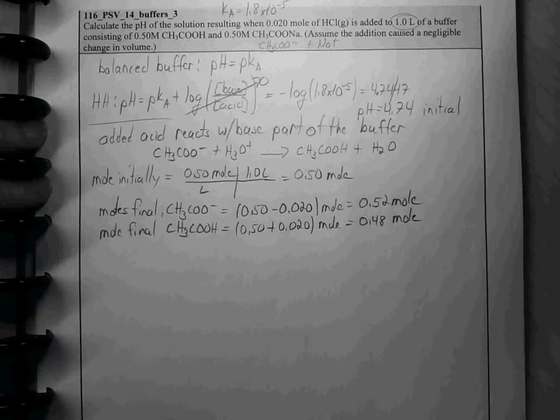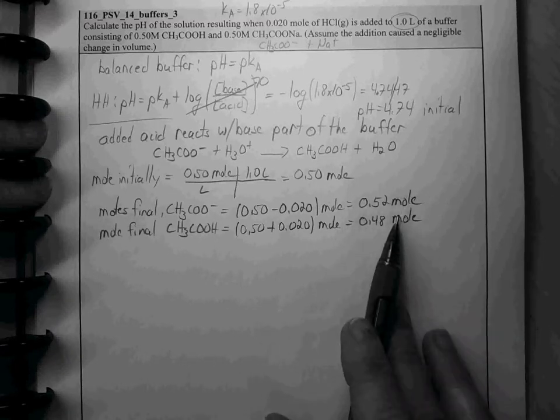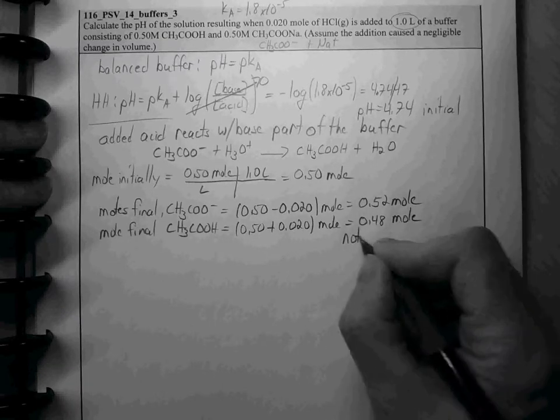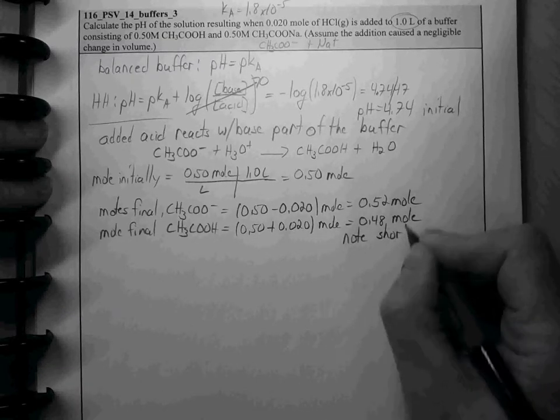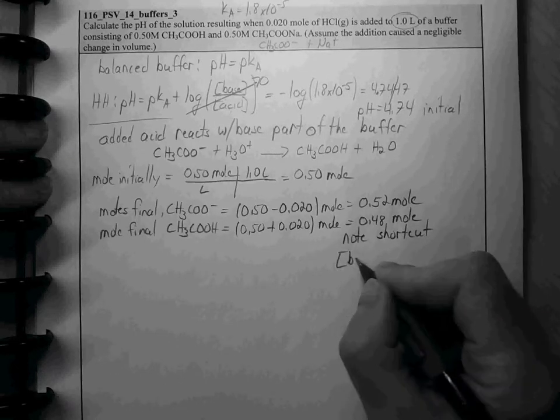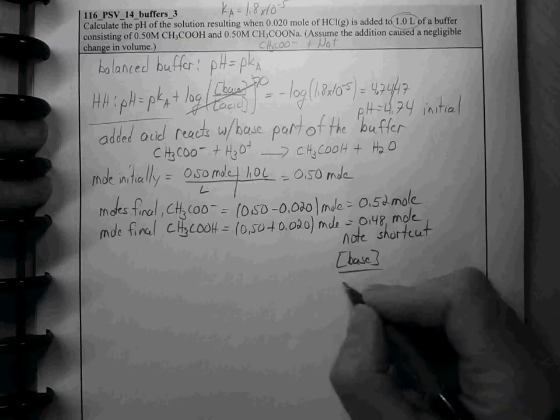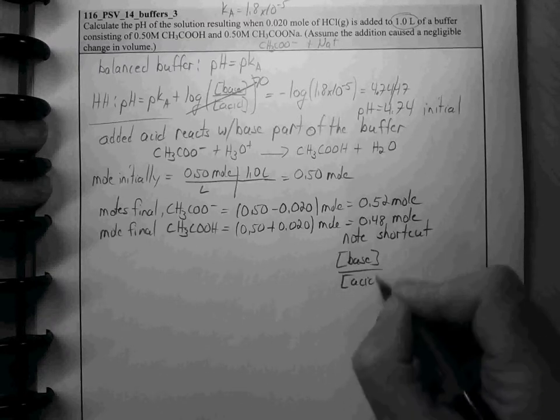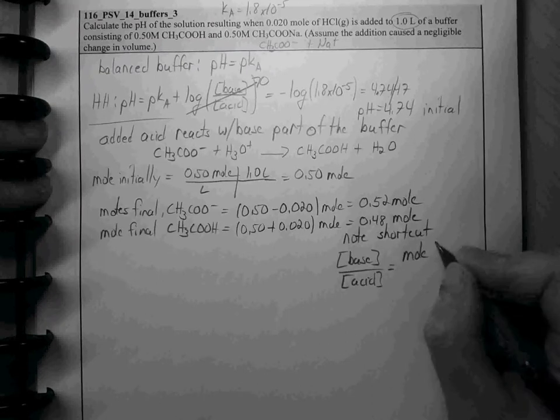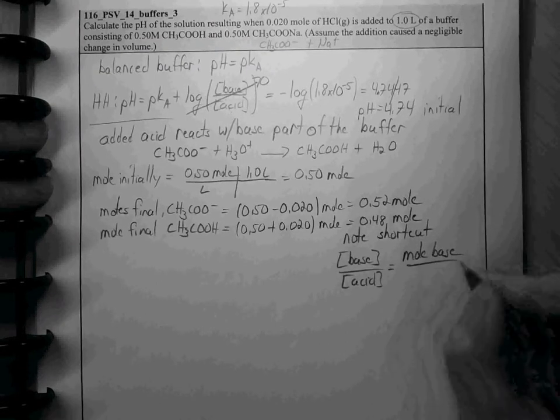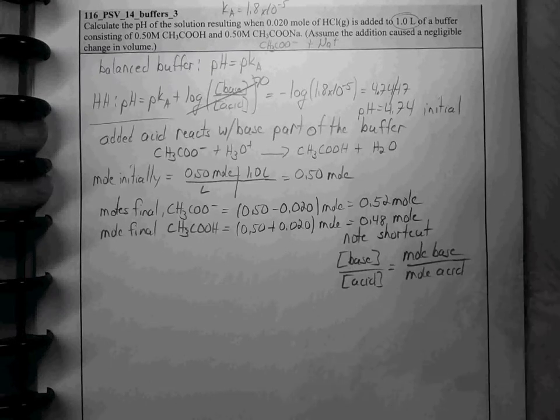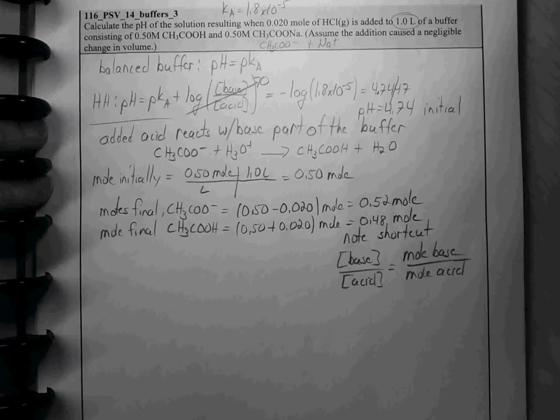Alright, now since everything is in the same pot, we can use the shortcut that the ratio of the concentrations of the base to the acid is the same as the ratio of the moles of the base to the moles of the acid.